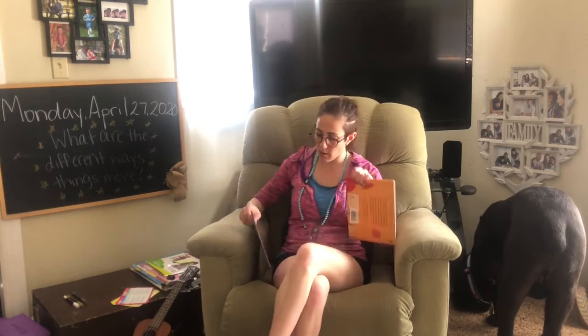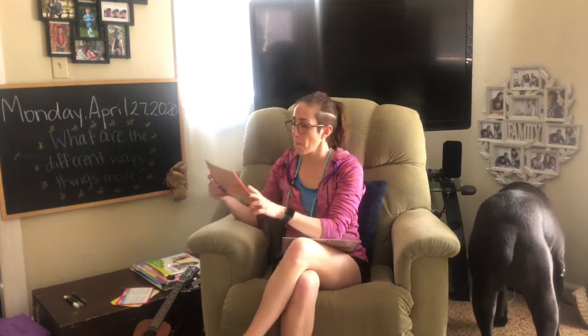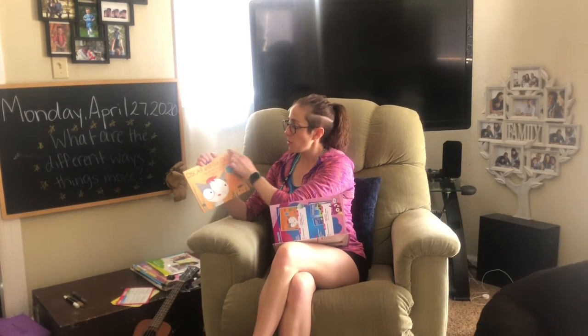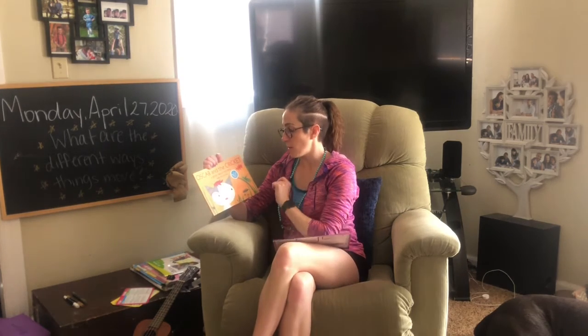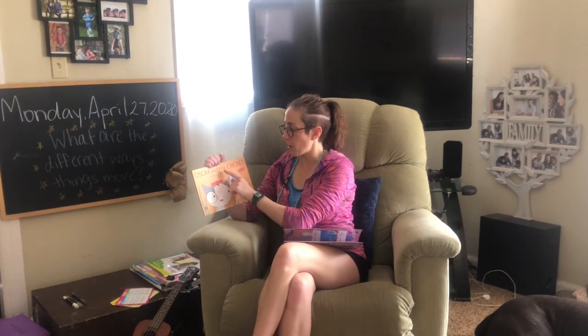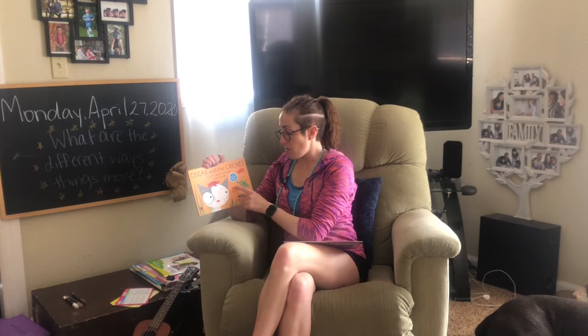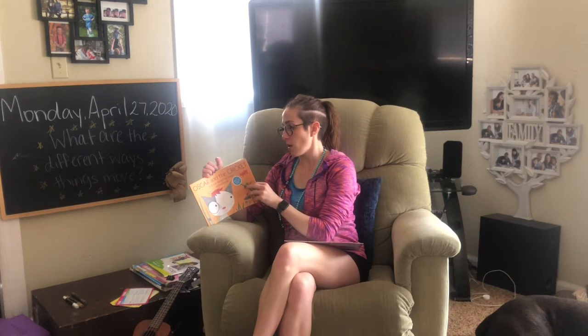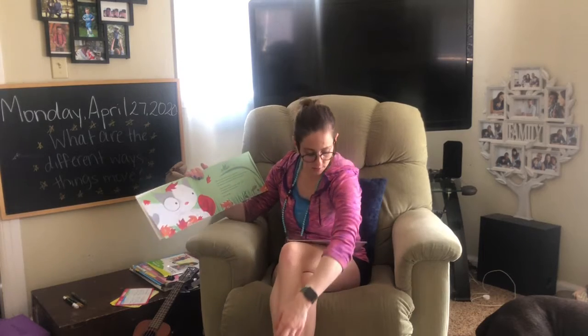So now let's take a look at our book. It's called Oscar and the Cricket, and I really like this book because I think it's a lot of fun. This is a book about moving and rolling. Do you remember what it's called when it tells us the name of the story? That's the title. This one is Oscar and the Cricket, a book about moving and rolling. It is by Jeff Waring. Who's that person? That's the person that wrote the story — what are they called? The author. Very nice.